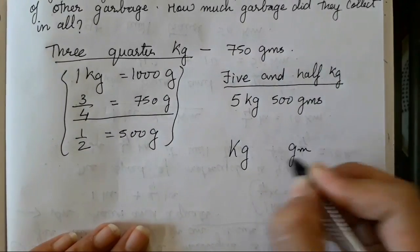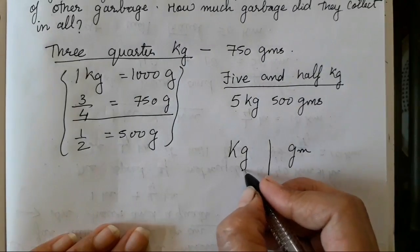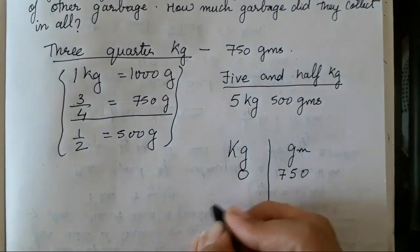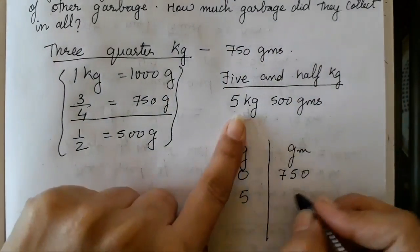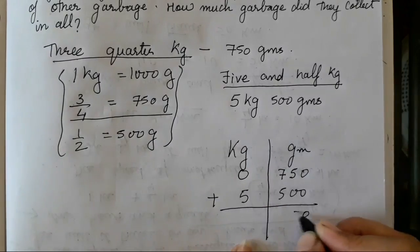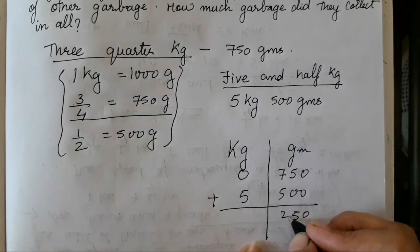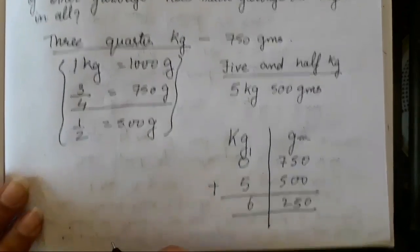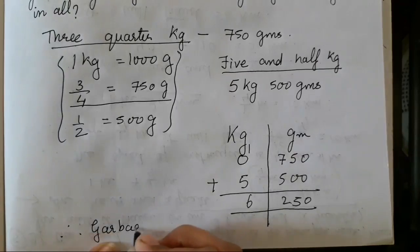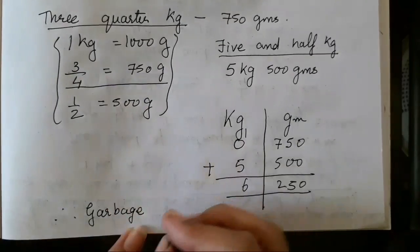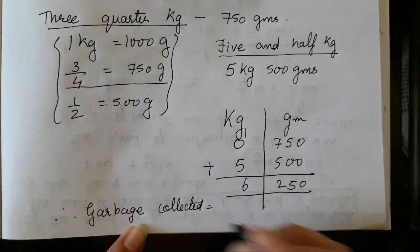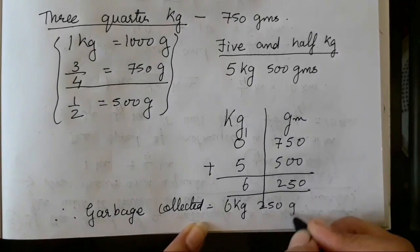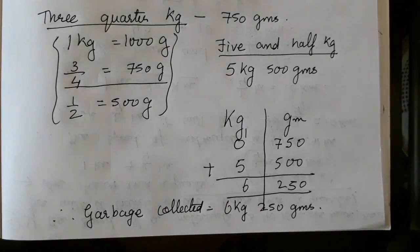Adding: 750 grams plus 500 grams is 1250 grams, which is 1 kg 250 grams; carry 1 kg: 0 plus 5 plus 1 is 6 kg. Therefore, garbage collected is 6 kg 250 grams.